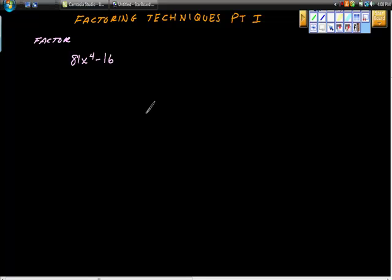Okay, so here's factoring techniques part one. Start with this polynomial, 81x to the 4th minus 16. It kind of looks like a mess. What I'm wondering is, can you imagine this looking like difference of squares?